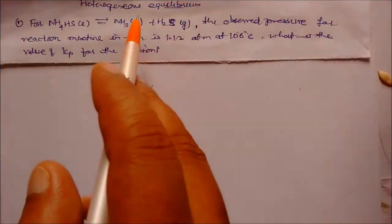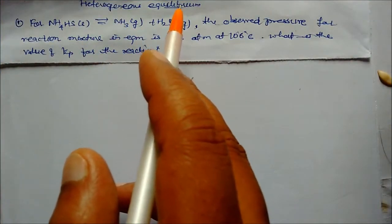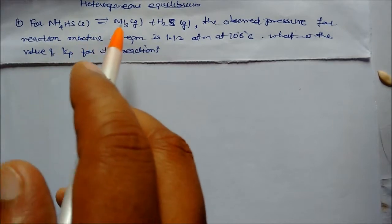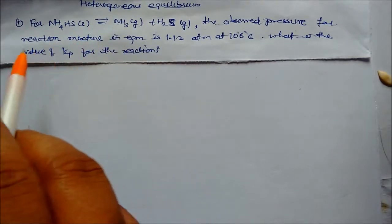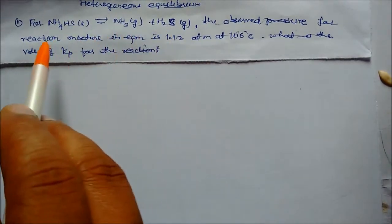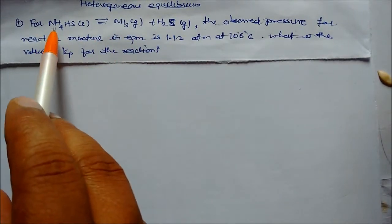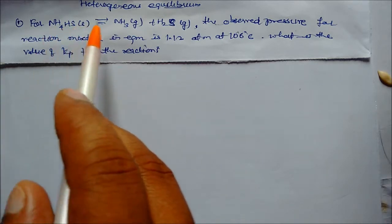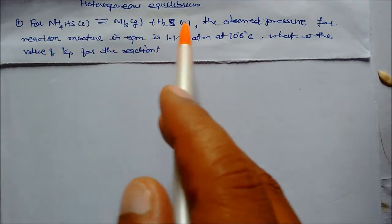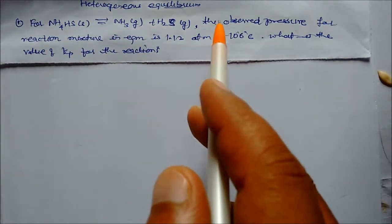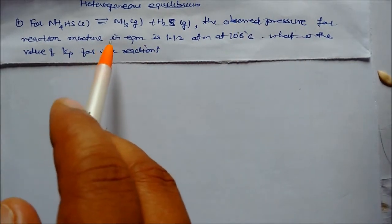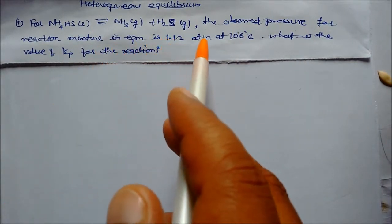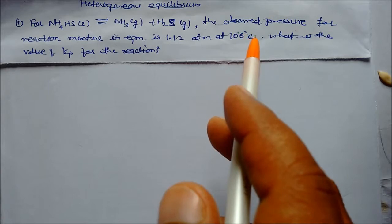We are solving a problem based on heterogeneous equilibria, where reactants and products are in different phases. Ammonium hydrogen sulfide is present in solid phase while the products are in gas phase. The observed pressure for the reaction mixture at equilibrium is 1.12 atmosphere at 106 degrees centigrade.